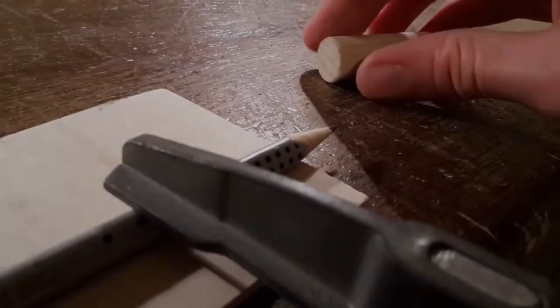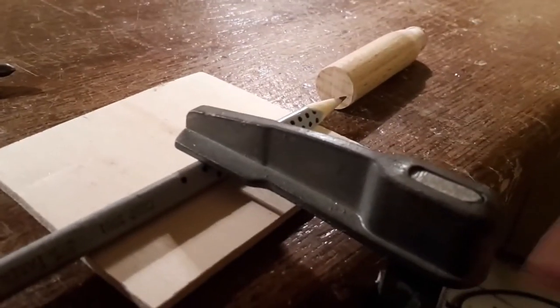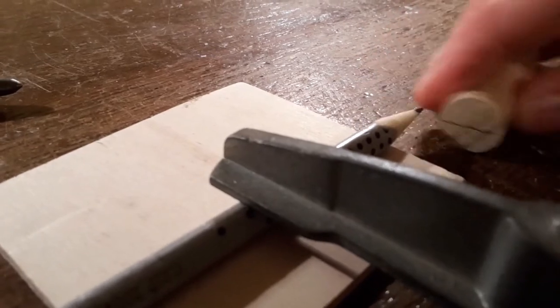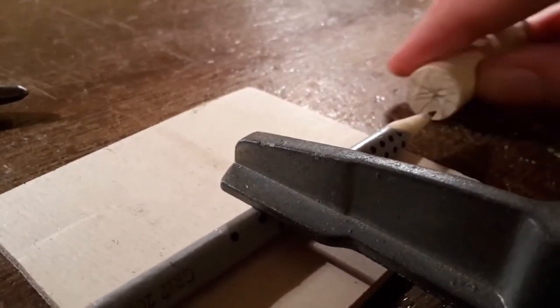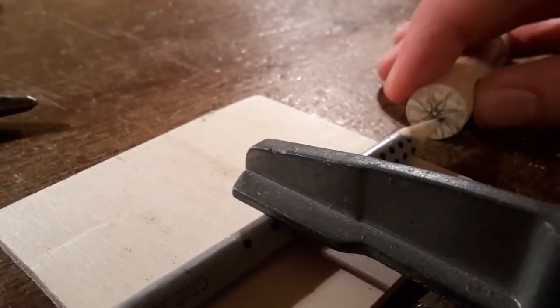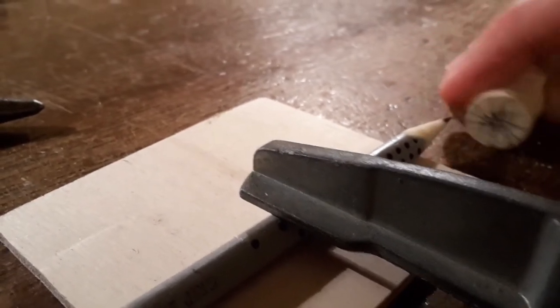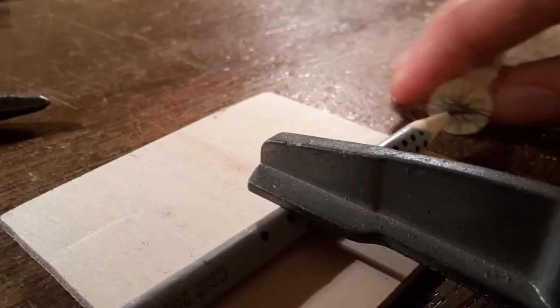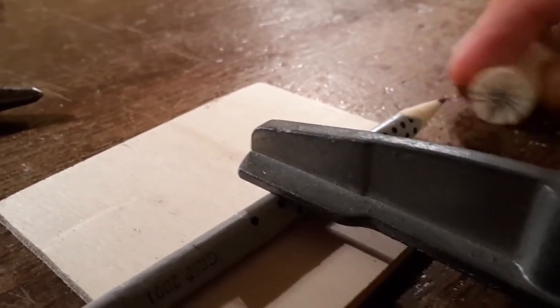Here's a close-up of this process. I just clamped the pencil down with a clamp, and then run your wooden dowel over the tip of the pencil. Continue doing that until you see that this little center point is starting to show.